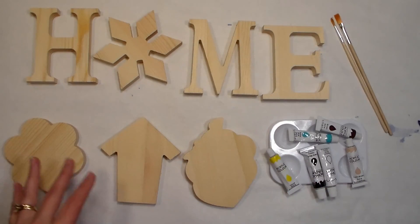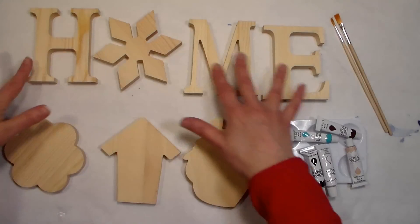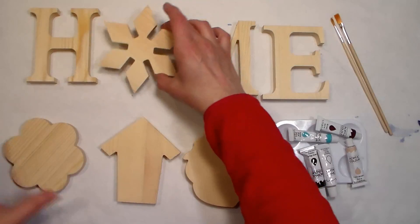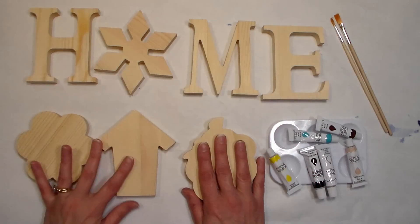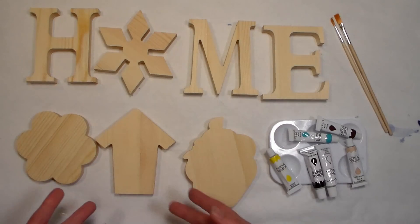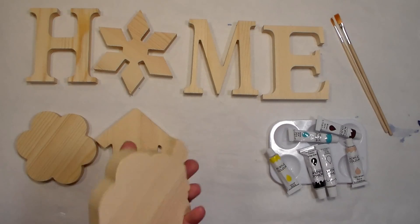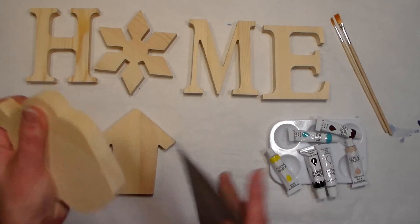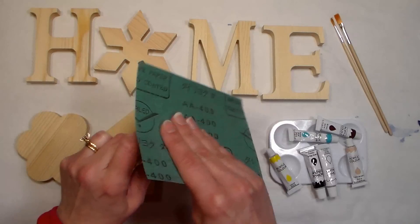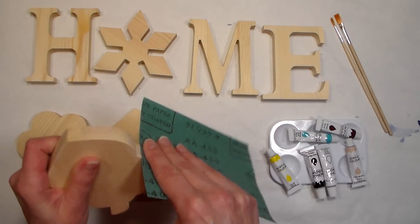I thought this next project would go really well with the dip dyed napkins, and this is a decoration. You got the word home, and then for the O you have a winter, spring, summer, or fall icon that you can use. I thought this would be really pretty as a centerpiece with our napkins. So the first thing you need to do with this project is to gently sand them. These actually came very smooth, but I think the edges you might want to just so that your paint will go on smoother.